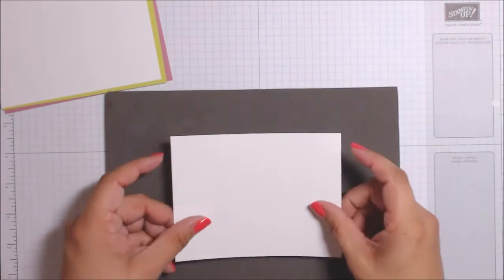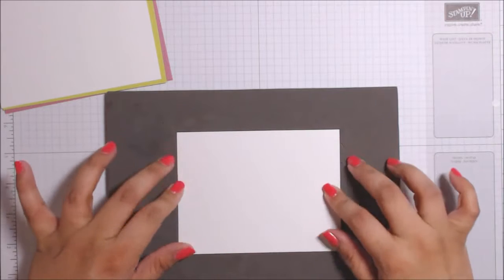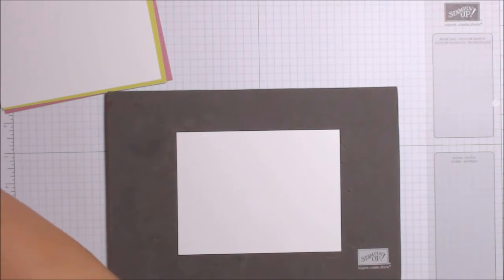The colors that I'm using this time are Sweet Sugar Plum, Lemon Lime Twist, Whisper White, Pool Party for the flowers, and of course some rhinestones.